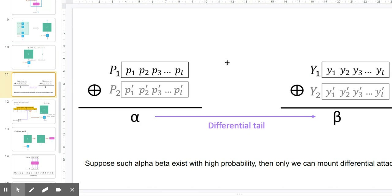The difference between the plain text P1 and P2 is denoted by alpha, and the difference between the intermediate text Y1 and Y2 is denoted by beta.